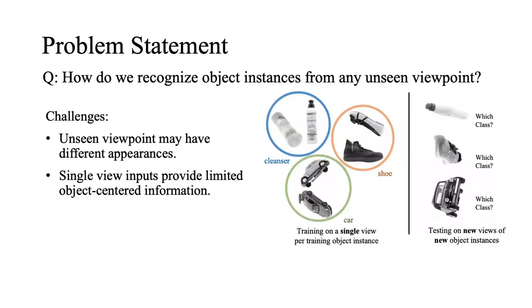The problem we are trying to solve is how can we recognize object instances from any unseen viewpoint with limited view information. Given that unseen viewpoints may have different appearances, and using limited single view information during training may not provide enough object-centered information.